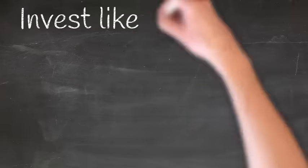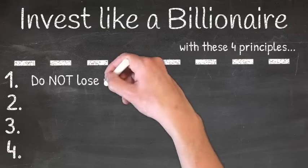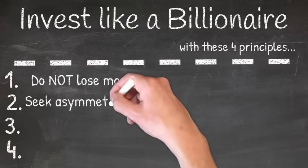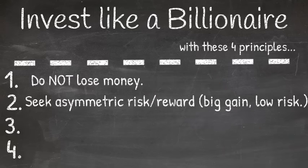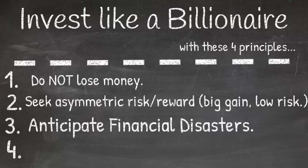Step six: Invest like a billionaire. To do this, follow four principles. The first principle is do not lose money. The second principle is to seek asymmetric risk-reward, which is high reward, low risk. The third is to anticipate financial disasters, so diversify your investments.